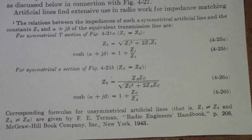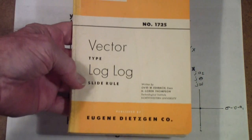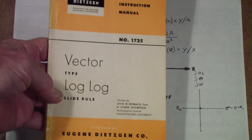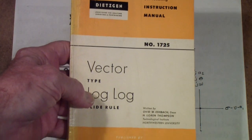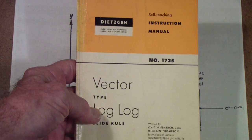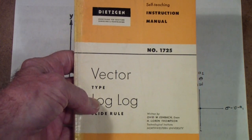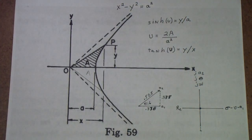The basis of this figure is taken from the Deetson 1725 vector log log slide rule manual — this is figure 59 from that manual. I recommend that if you really want to learn hyperbolic functions, this is probably as good a text on hyperbolic functions as you'll find. It also contains specific instructions on how to use a vector log log slide rule to calculate some of these things.